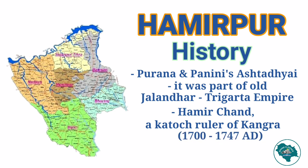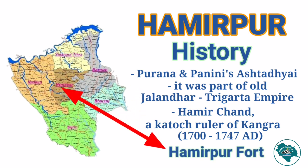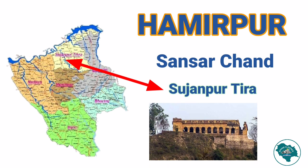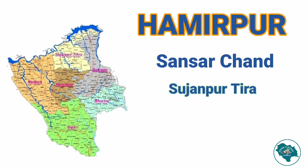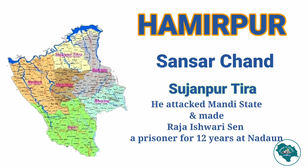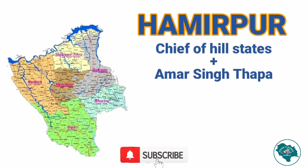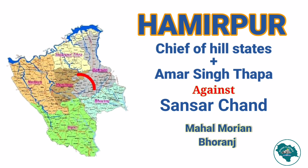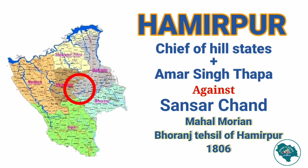When the Katoch dynasty became powerful under Hamirchand from 1700 to 1747 AD, he put all these ranas under his control. He built the fort of Hamirpur. Sansar Chand made Sujanpur Tira his capital and constructed palaces and temples there. During this time, he attacked Mandi state and made Raja Ishwari Sen a prisoner for 12 years at Nadan. When the chiefs of hill states joined hands with Amar Singh Thapa against Sansar Chand, the combined army fought against Sansar Chand at Mahalmorya in Hamirpur, in Bhoranj Tahsil, in 1806.